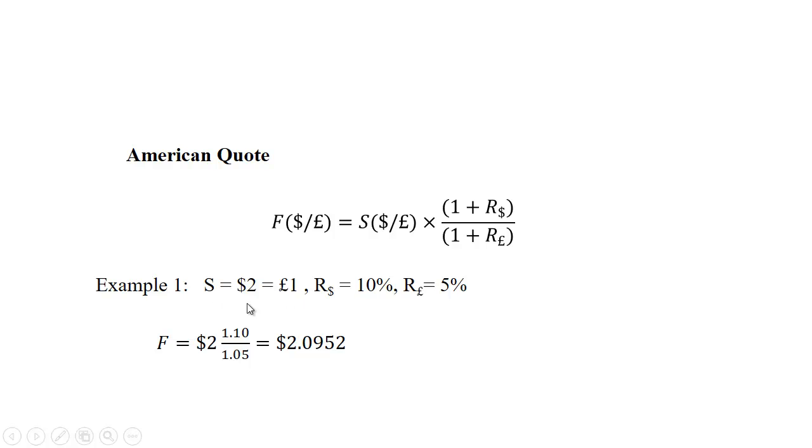For example, let's say the spot rate is $2 to buy one pound. The U.S. rate or the dollar interest rate is 10%, and the interest rate in the U.K. or the pound rate is 5%. Then using this formula, we would have $2 times 1.10 divided by 1.05, which turns out to be $2.0952 to buy one pound sterling. So what we see here is that the dollar has depreciated because it has the higher rate, and the pound has appreciated—each pound gets us more U.S. dollars.